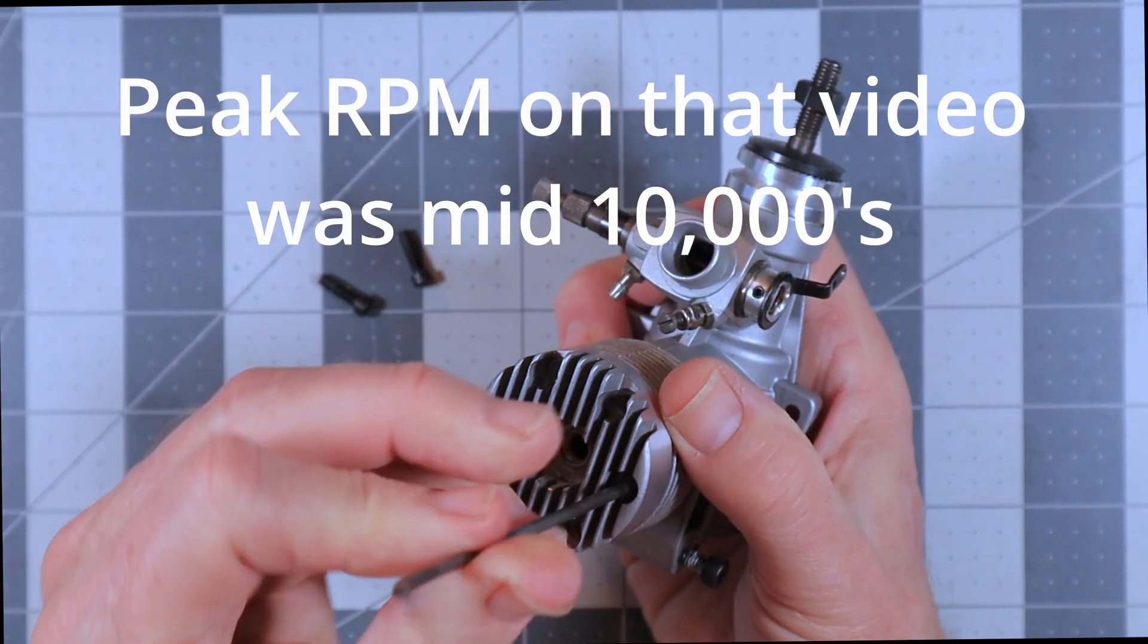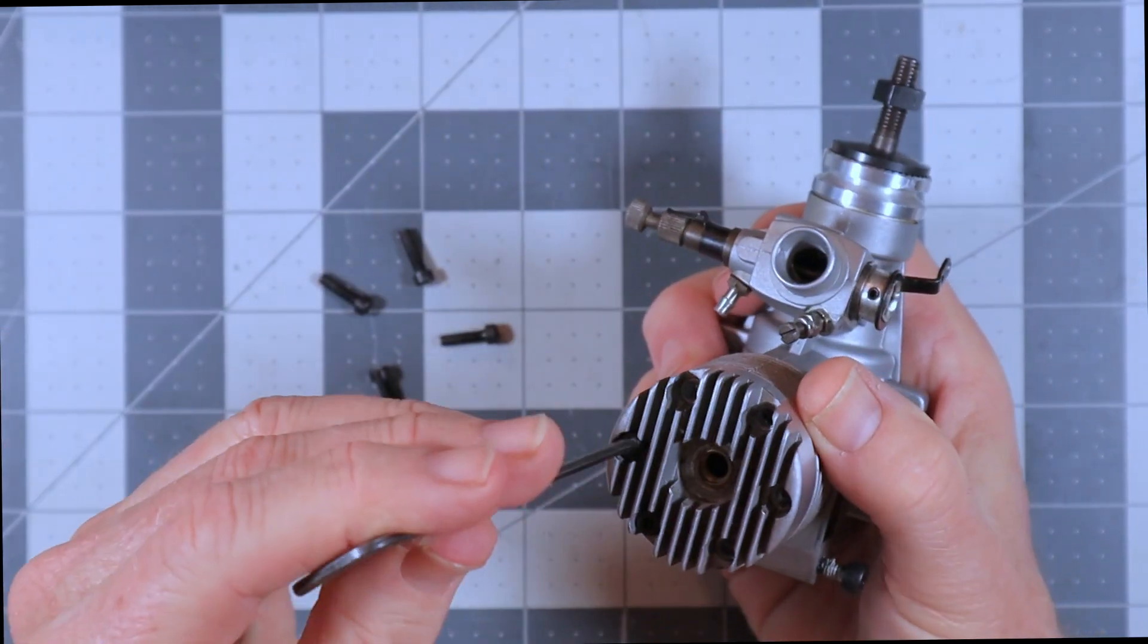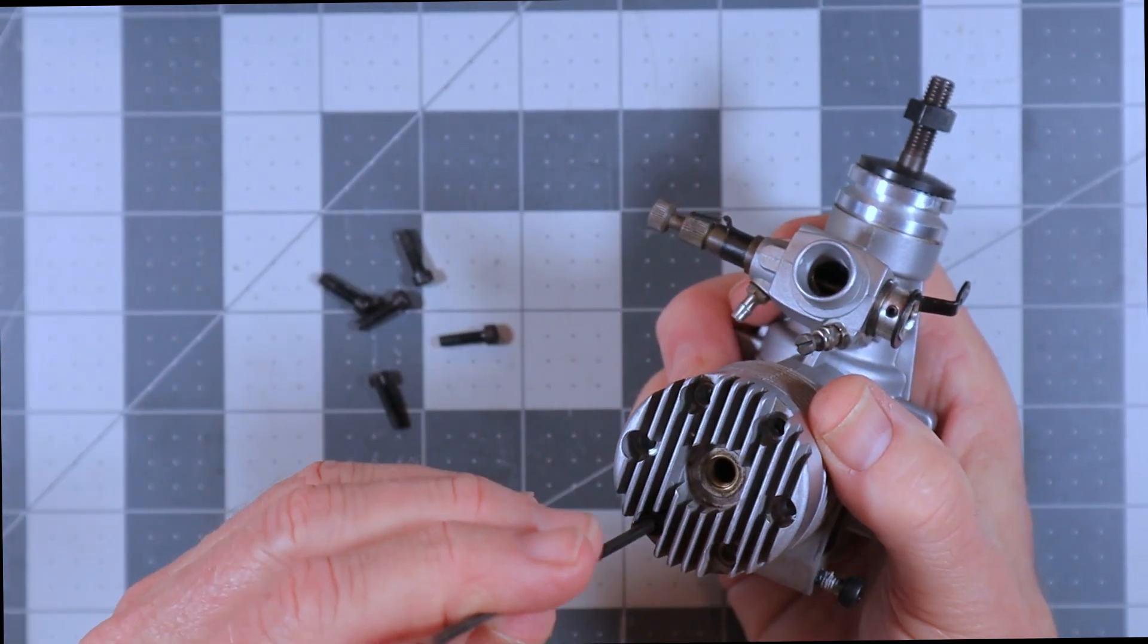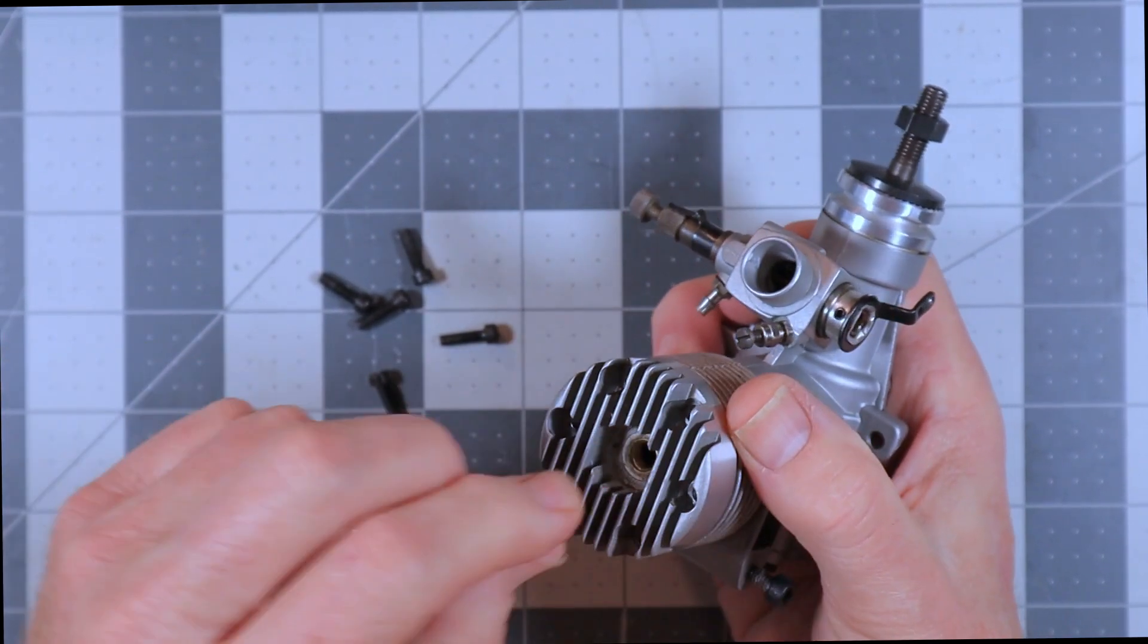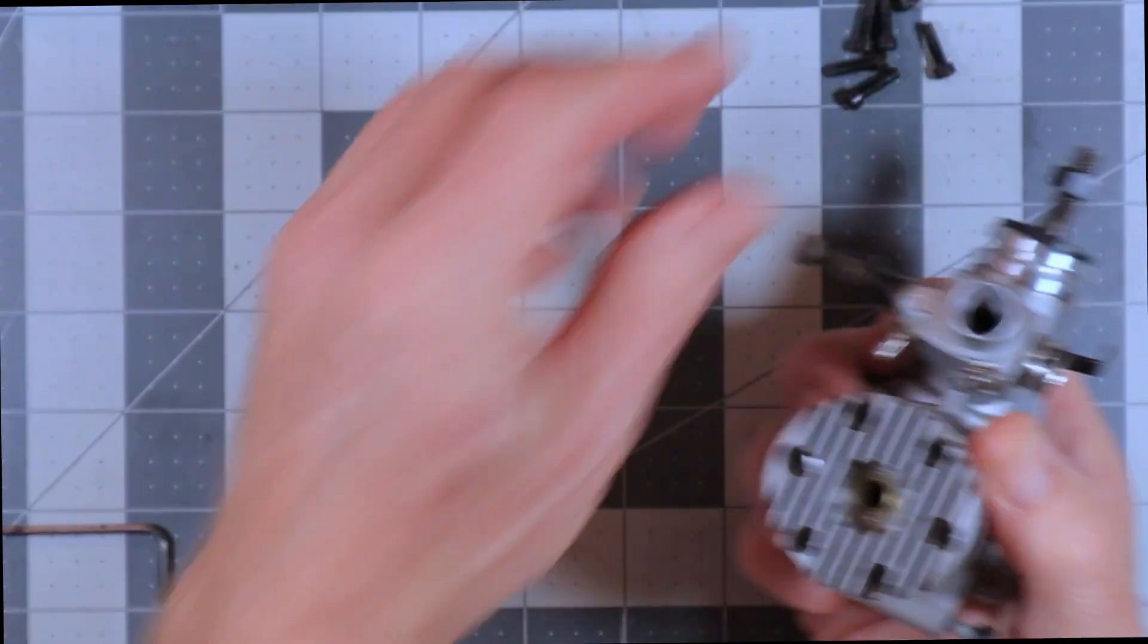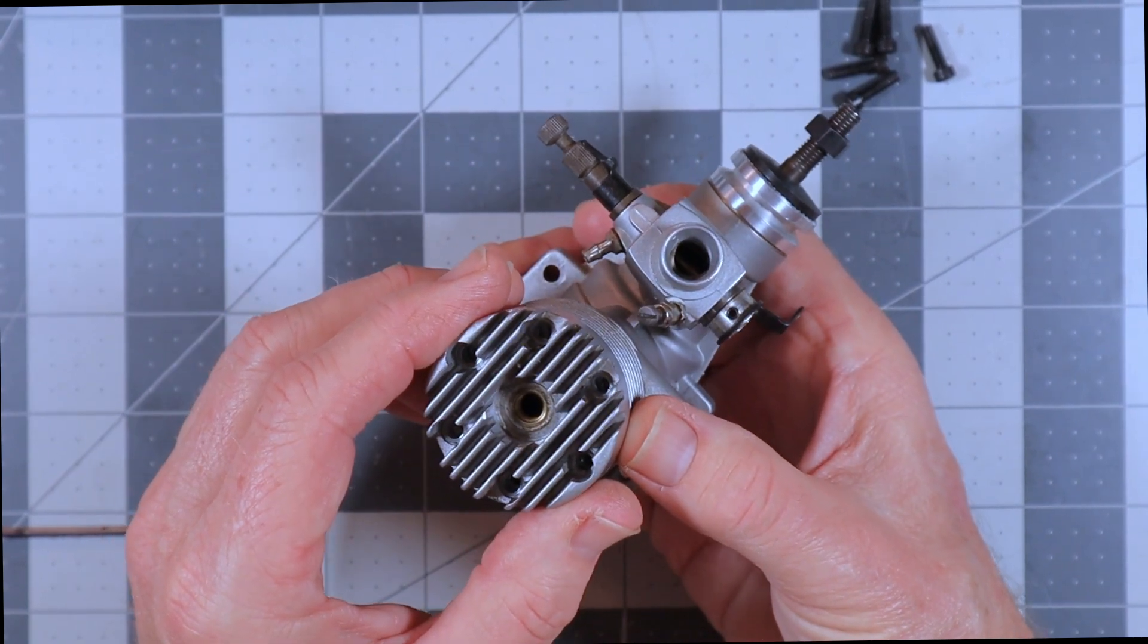I don't recall off the top of my head what the peak RPM was on it, but this time, if this is designed to peak out a little bit more, I'm going to put a smaller prop on it when I run it, and hopefully I'll get it run this year because it is fall, getting cold now.